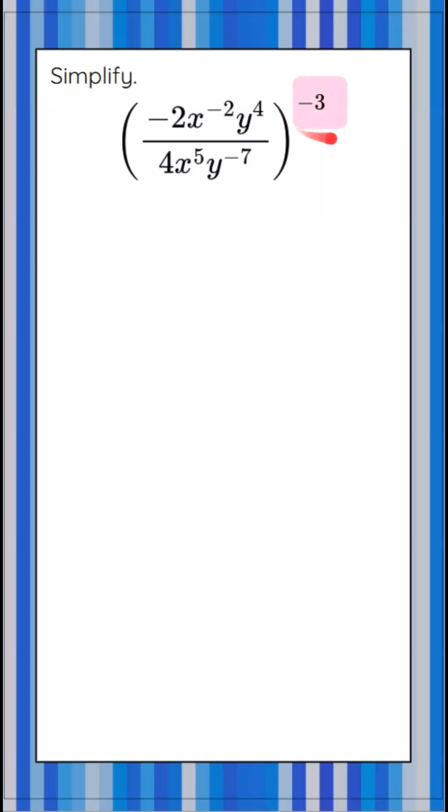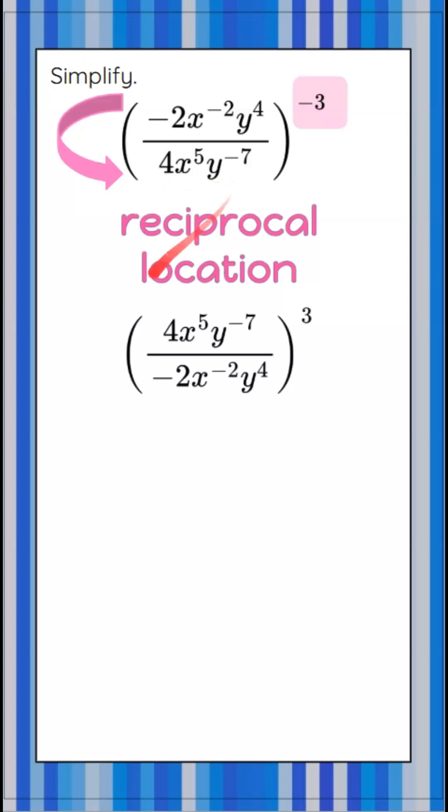Let's start by clearing a negative exponent. We call that reciprocal location, where we're actually going to change the location of everything inside the parentheses to clear the negative sign on the exponent. So the denominator goes to the numerator, and the numerator goes to the denominator. Here we go.